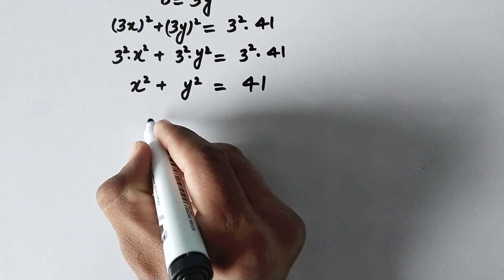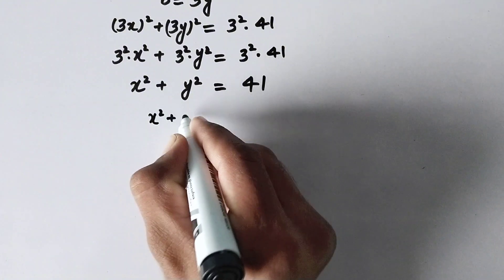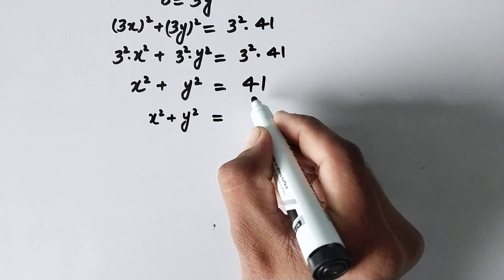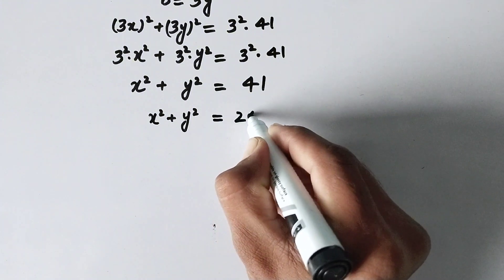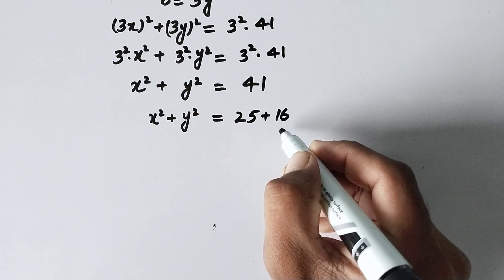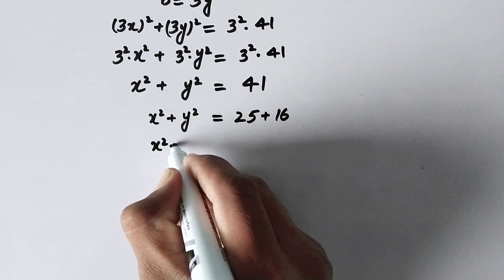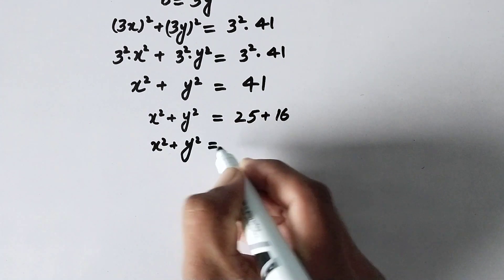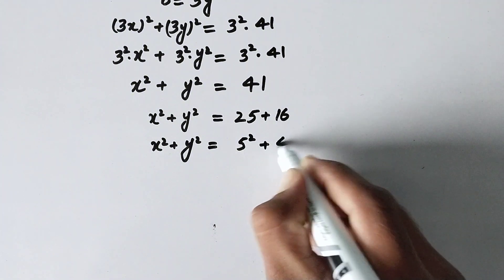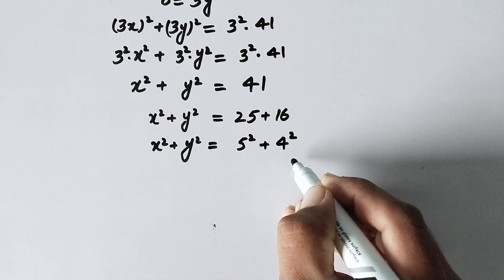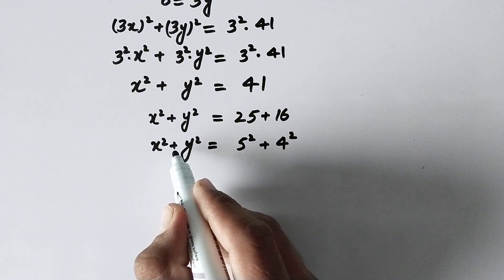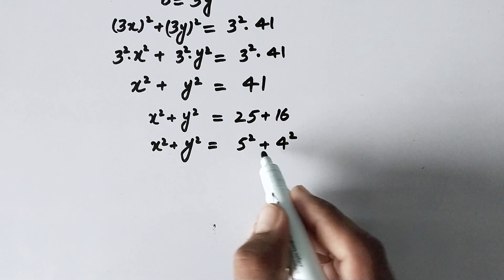Now here we can write x squared plus y squared is equal to 41. We can rewrite this as 25 plus 16, which is the same as 5 squared plus 4 squared. So here we can see that there is a sum of 2 squared values on both the right-hand side and left-hand side, so there will be 2 cases.